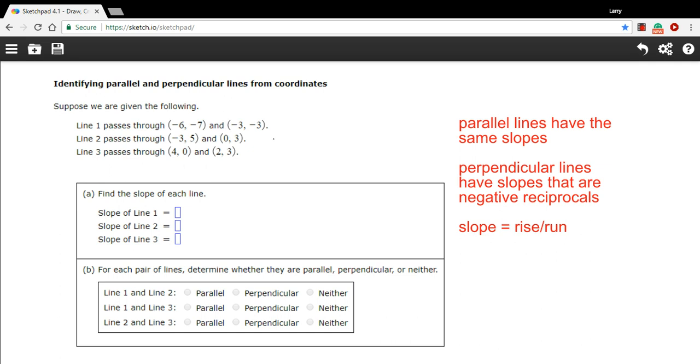And to calculate the slope for each of these lines, we're going to use that formula. We're going to get the rise by the change in the y-coordinate, and we're going to get the run by the change in the x-coordinate. For example, this one goes from negative 7 up to negative 3. That's a change of 4 in the positive direction. So we put a positive 4 there. And then it goes from negative 6 to negative 3. That's also a change in the positive direction of 3. So the slope for line 1 is 4 thirds.